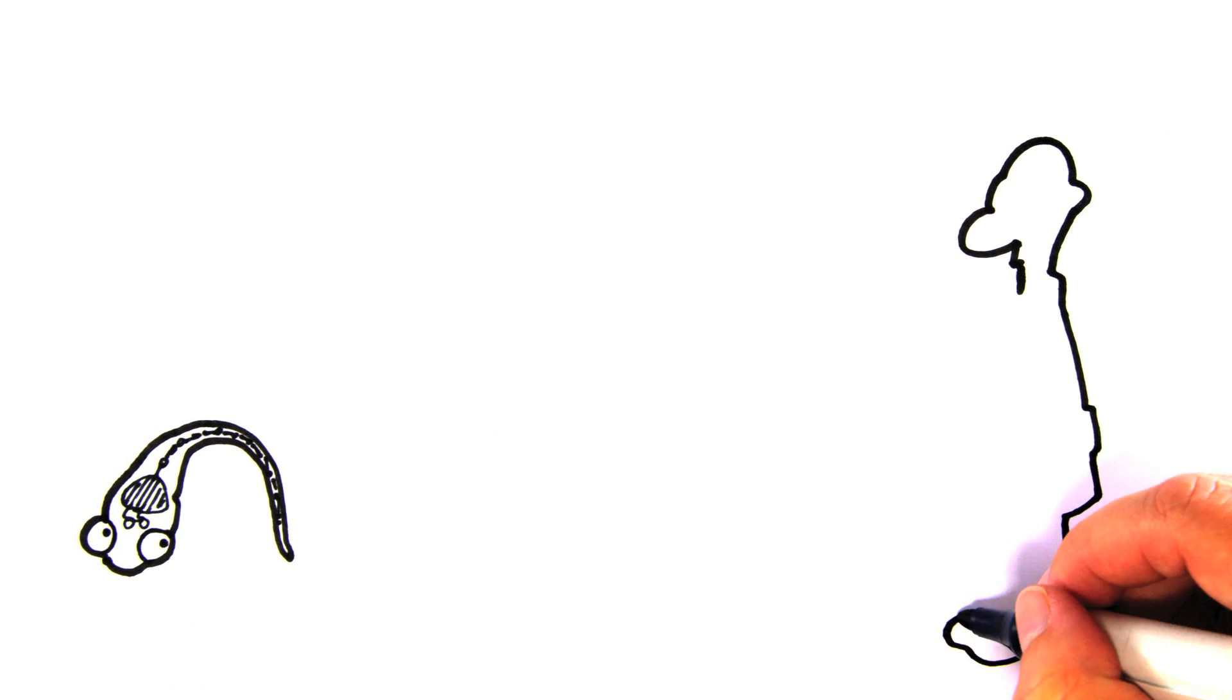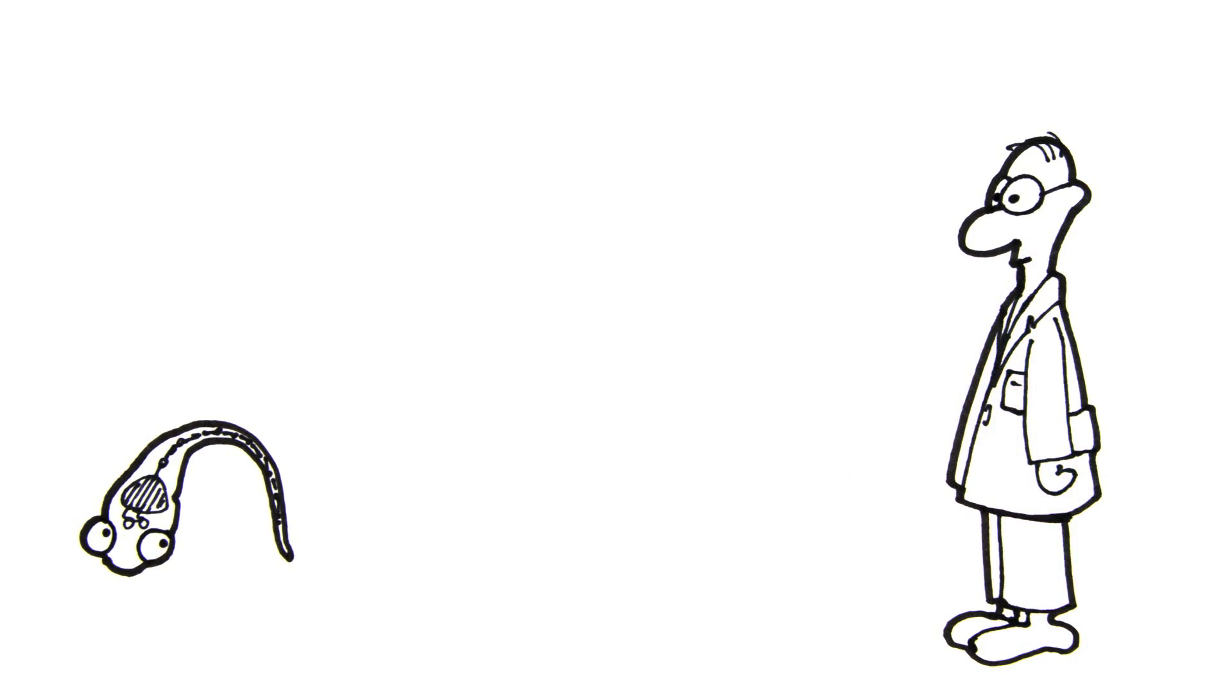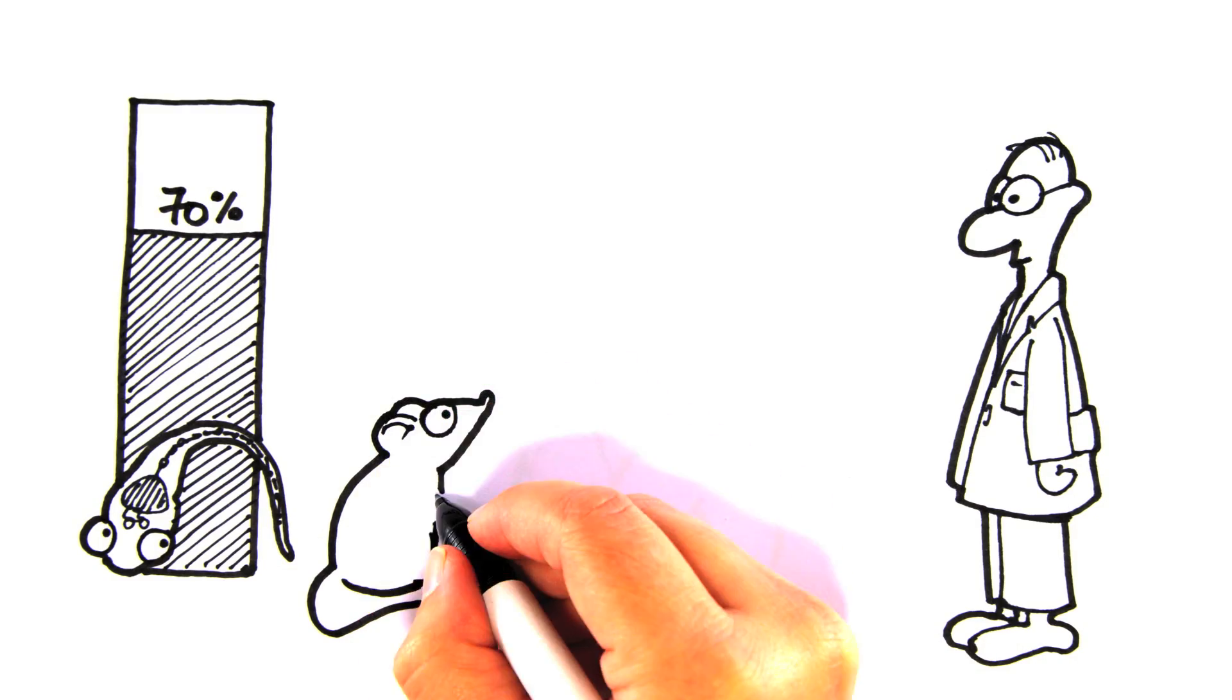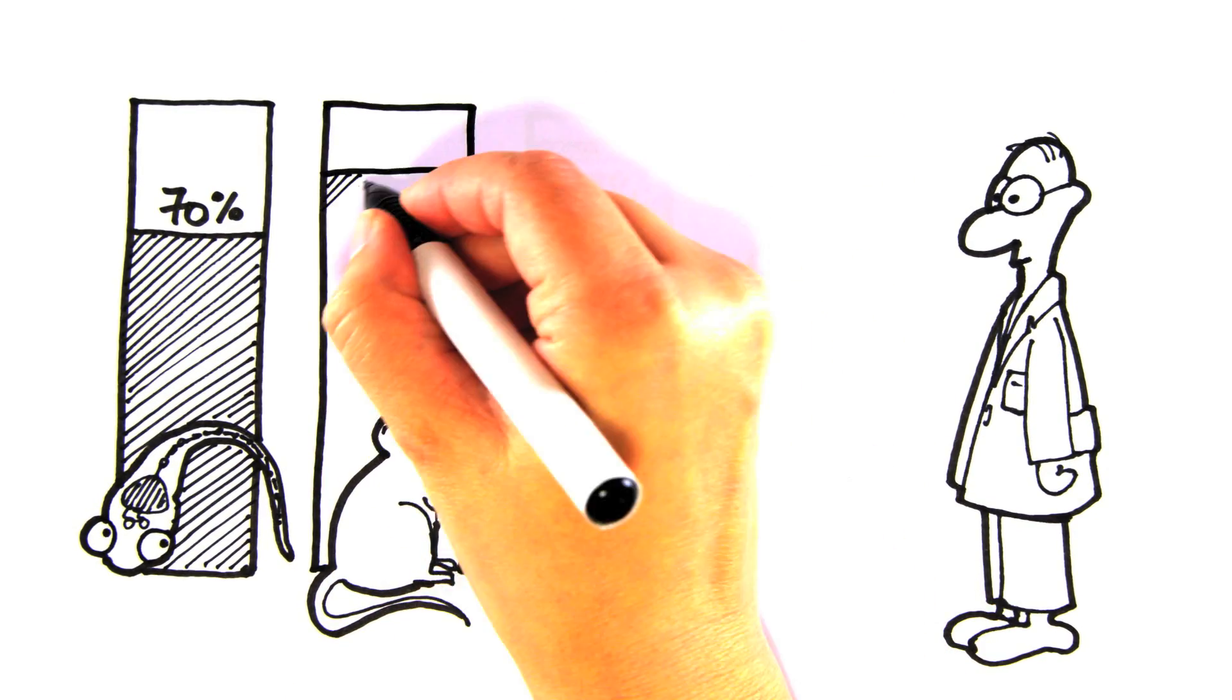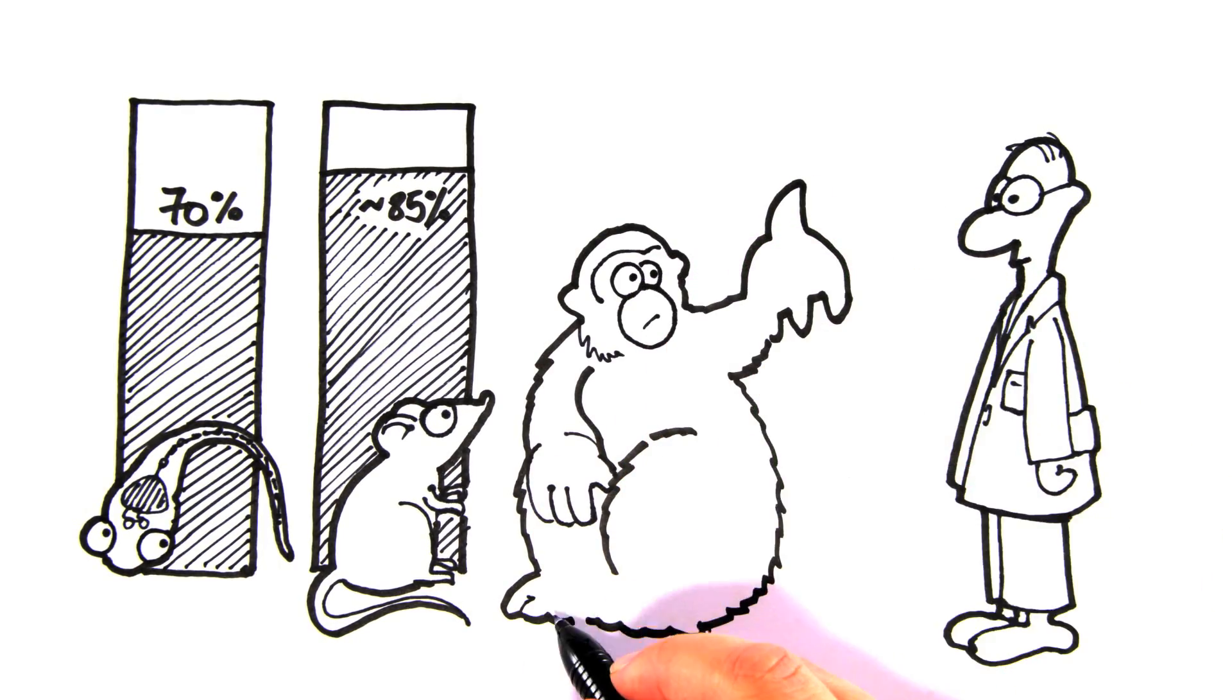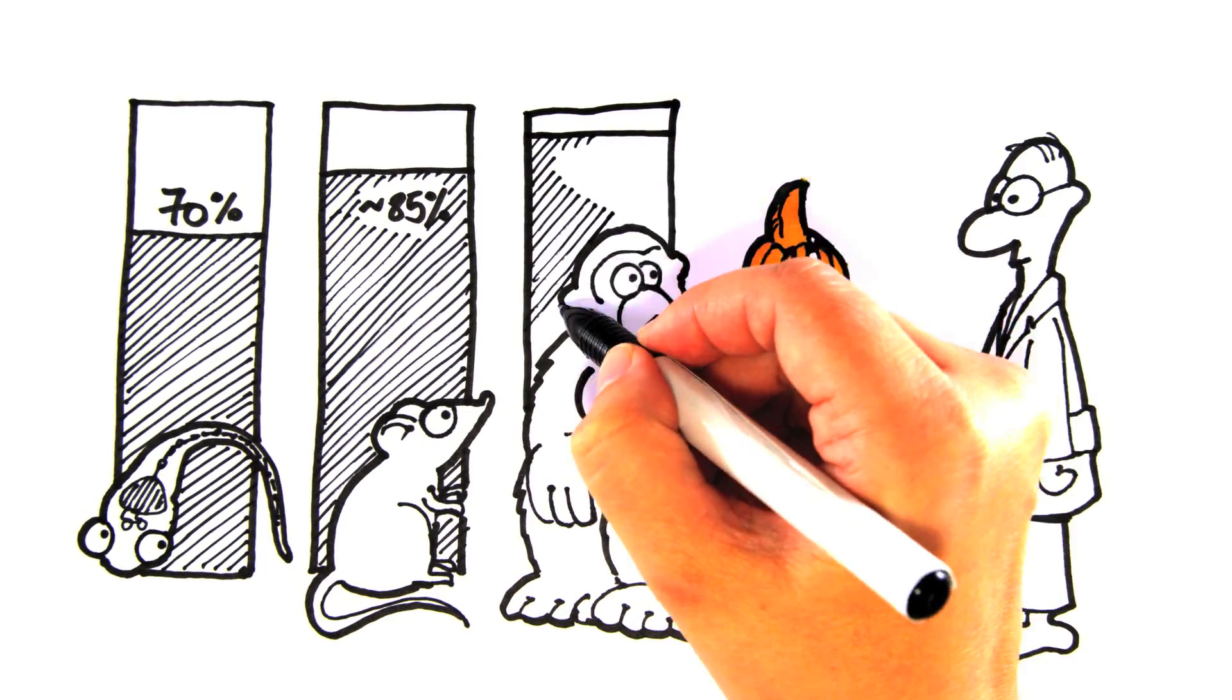If you wonder about the relevance of testing drug candidates on fish larvae, you are not alone. Zebrafish of any age do not look very much like humans. Seventy percent of human coding genes have an equivalent in zebrafish. Not too exciting if you consider that this number for mice is around 85 percent, and for chimpanzees greater than 90 percent. And they are not a perfect match either.